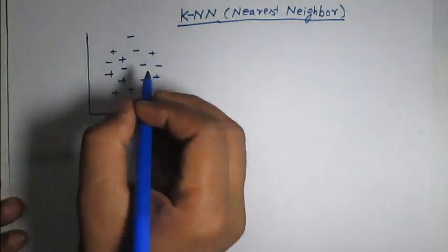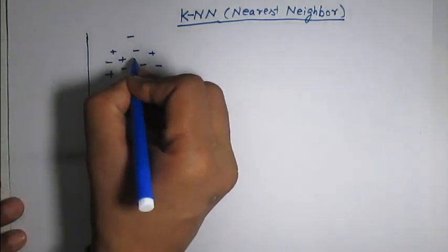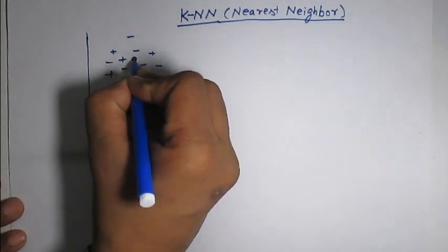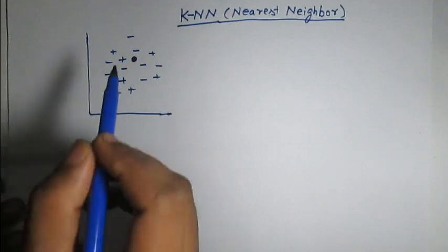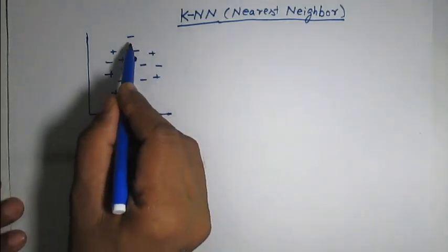Some examples are belonging to minus class and some are belonging to plus class. Now, suppose we want to classify an unknown data point which is presented here. We want to assign a label to this unknown data point. According to this algorithm, we have to consider its nearest neighbors.